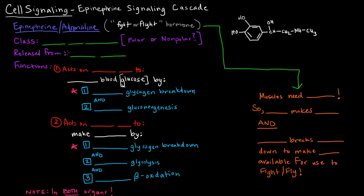The first thing we have to ask ourselves about epinephrine or adrenaline is: what class of hormone is this? This is an amino acid derivative. Specifically, epinephrine is a derivative of tyrosine. Tyrosine's structure has the phenyl group with the OH on it, and epinephrine has that portion. Amino acid derivatives are polar, which means they'll act via a process in which they bind a receptor on the cell surface. Epinephrine binds via a G-protein coupled receptor.